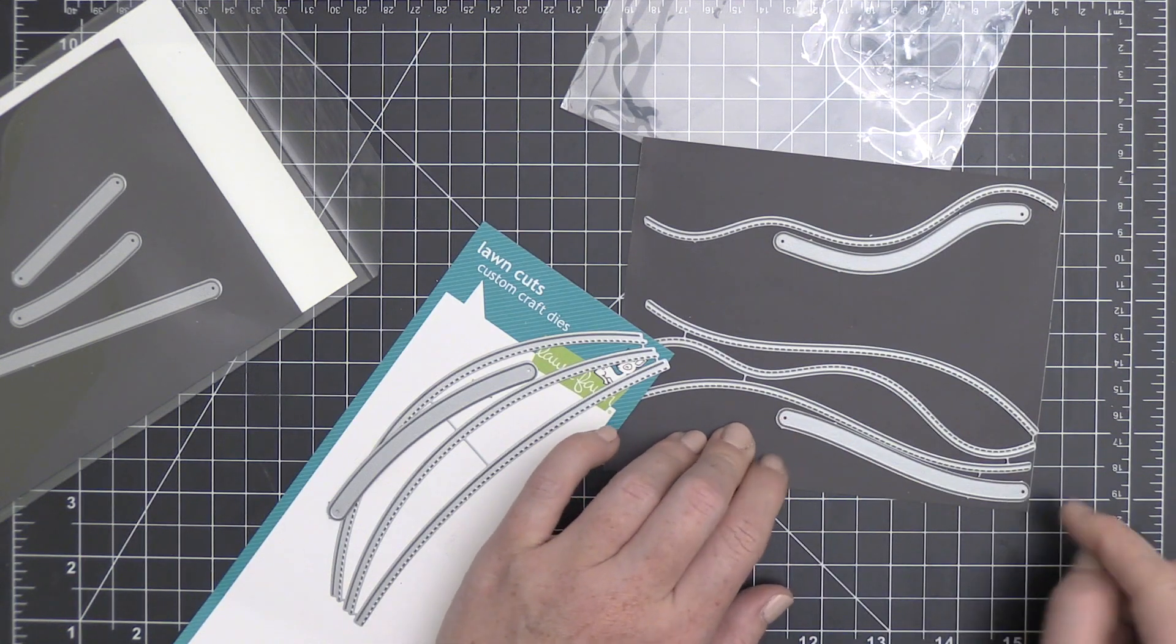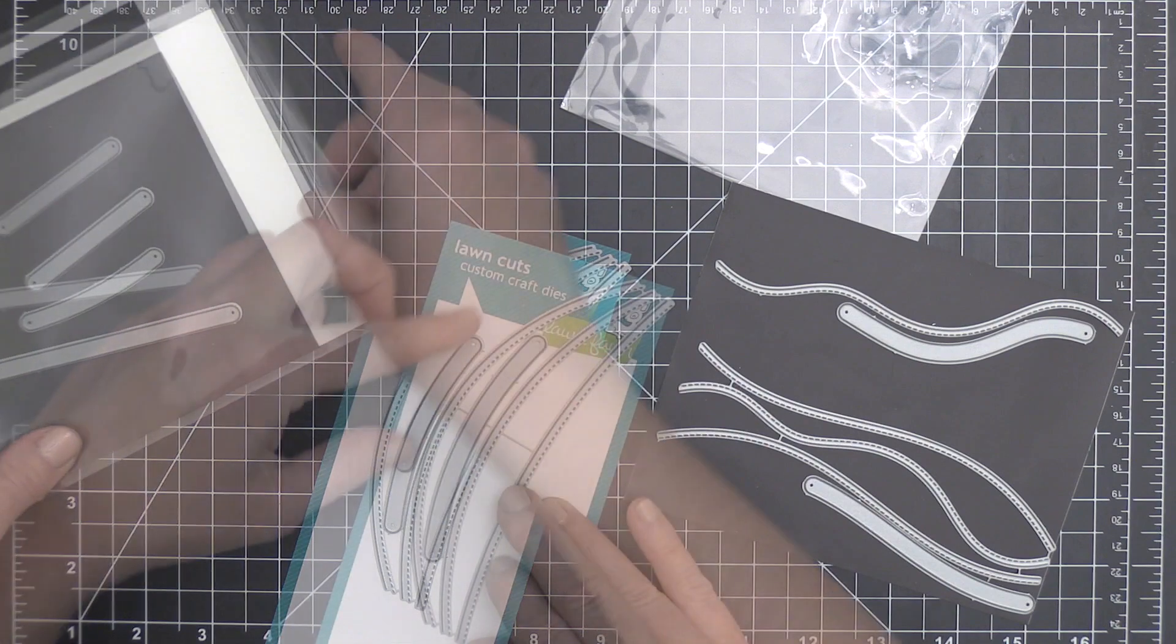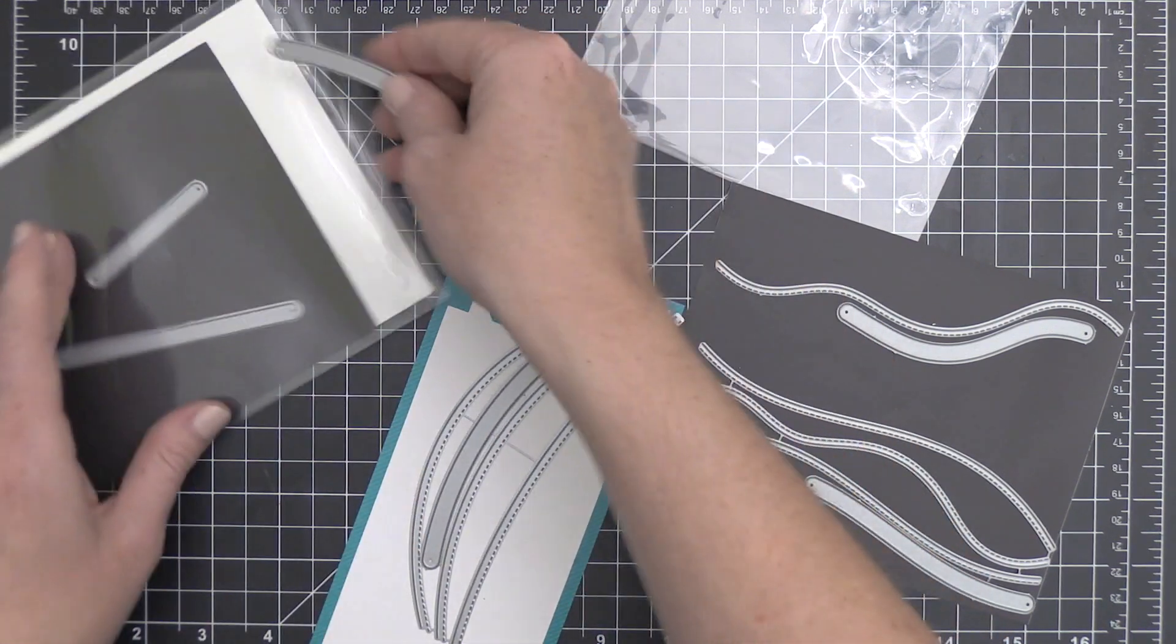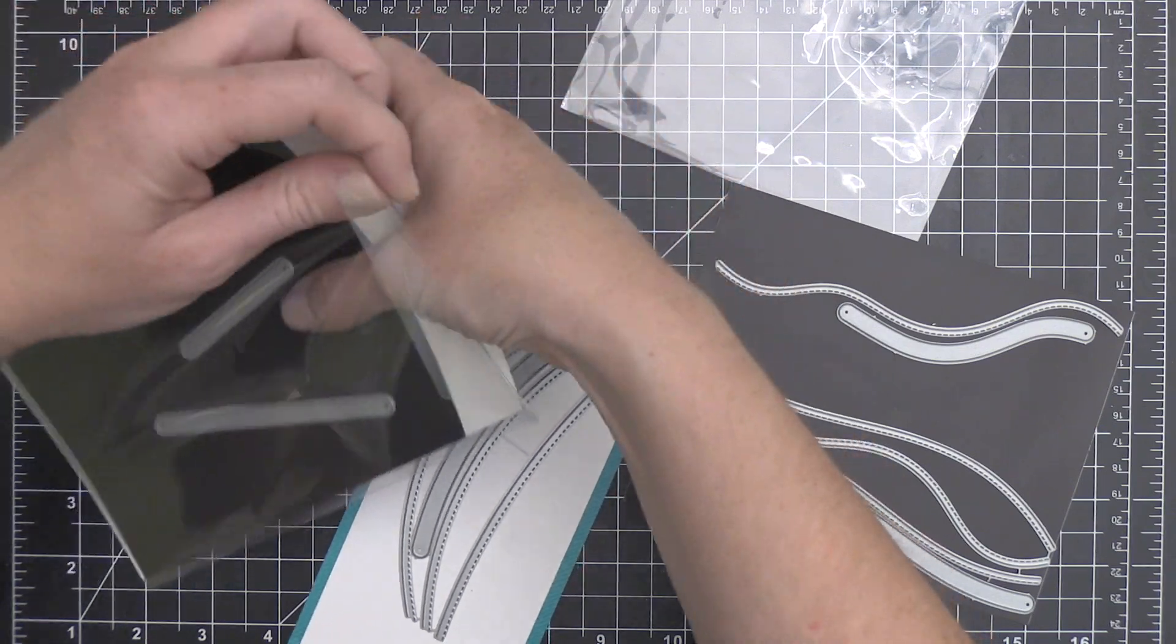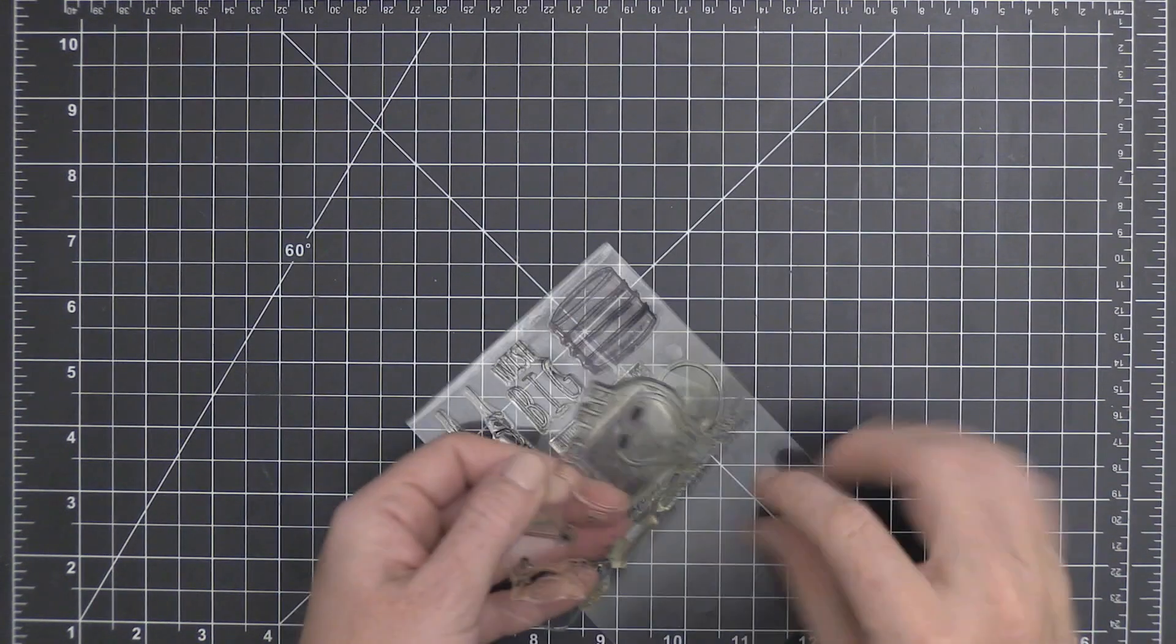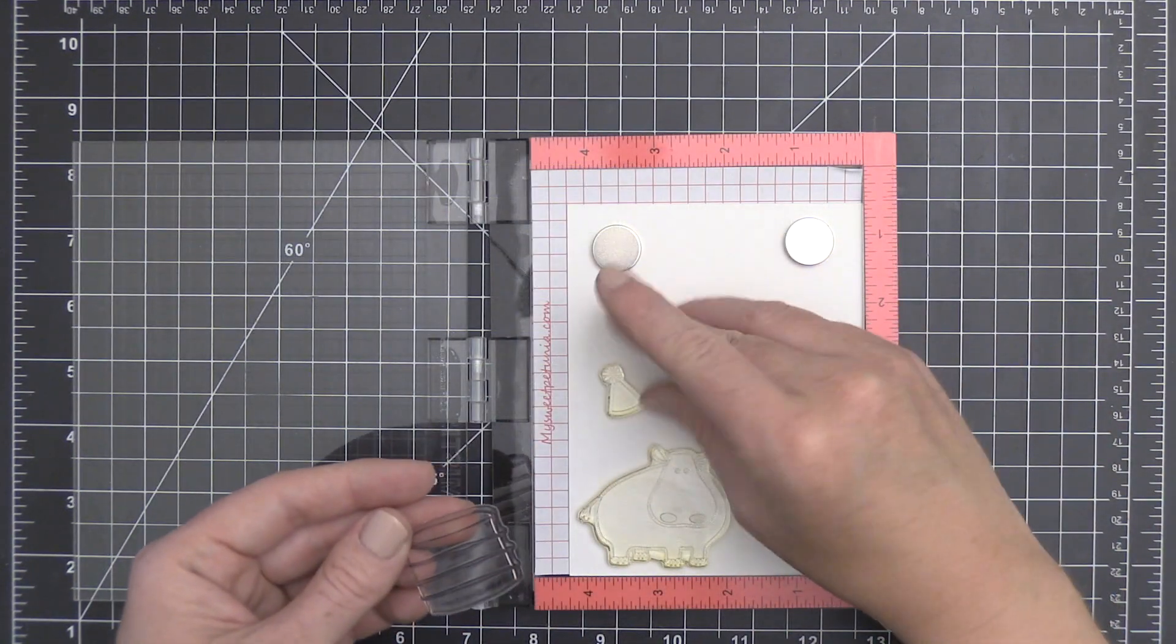The nice thing about this kind of curved one here is that there's a short and a long version, so you can make critters kind of go over the hills or you could even use these for a sentiment as well.